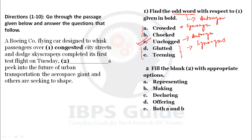Question number two: fill in the blank with the appropriate option. The sentence reads: 'completed its first test flight on Tuesday, dash a peak into the future of urban transportation.' The options are representing, making, declaring, and offering. Since the test flight is offering a glimpse into the future, the correct answer is 'offering.' The gap will be filled by 'offering.'